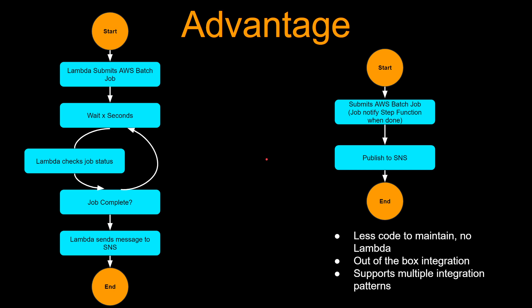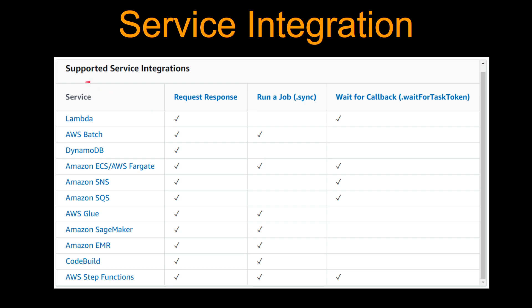So what are integration patterns? When you look at the supported service integration, you can see there are three different columns: request response, run a job (or .sync), and wait for callback (or .waitForTaskToken). Let's go into each of these and understand.